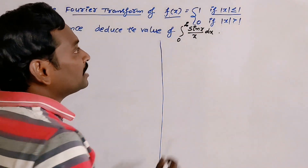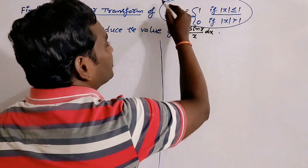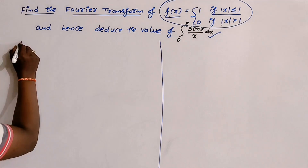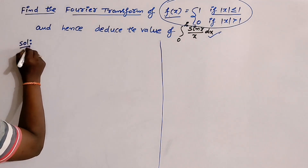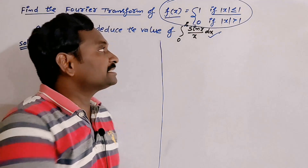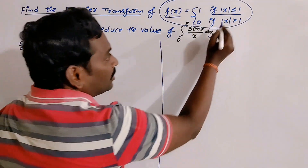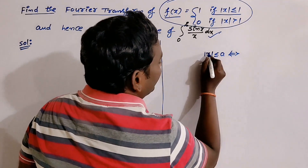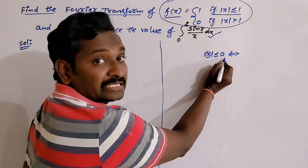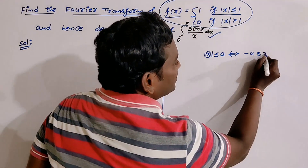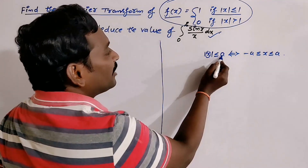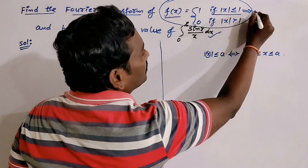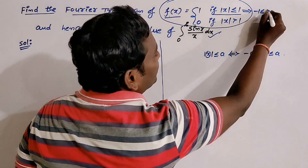First we have to find the Fourier transform of the given function, and after that we evaluate the definite integral from this Fourier transform. We begin by changing the conditions in the given function. According to the modulus definition, |x| ≤ a means x lies between −a and +a, i.e., −a ≤ x ≤ a. Here a = 1, so |x| ≤ 1 means x lies between −1 and +1.